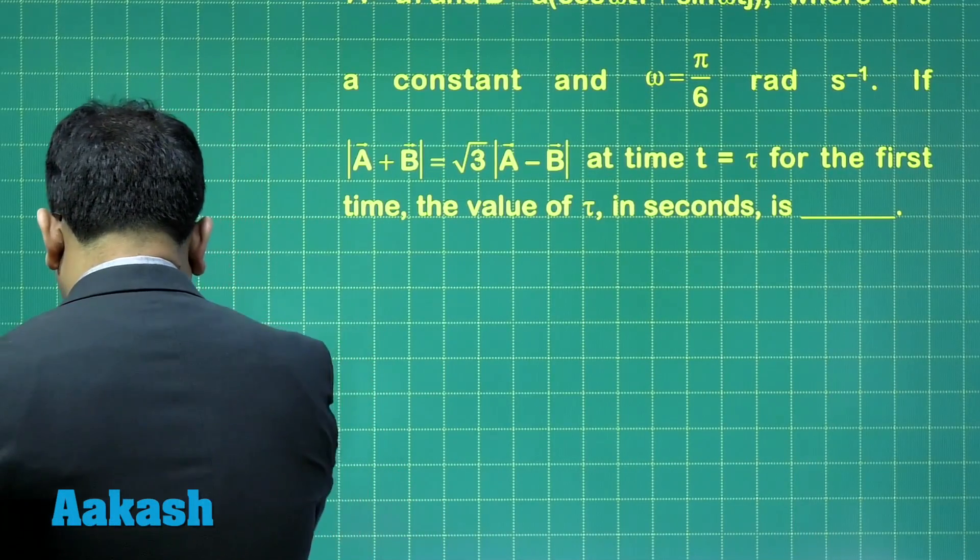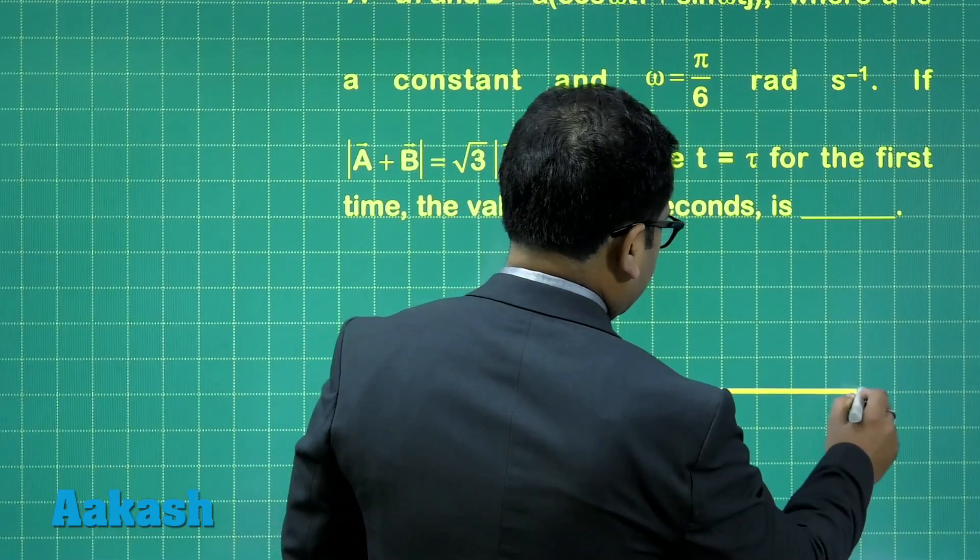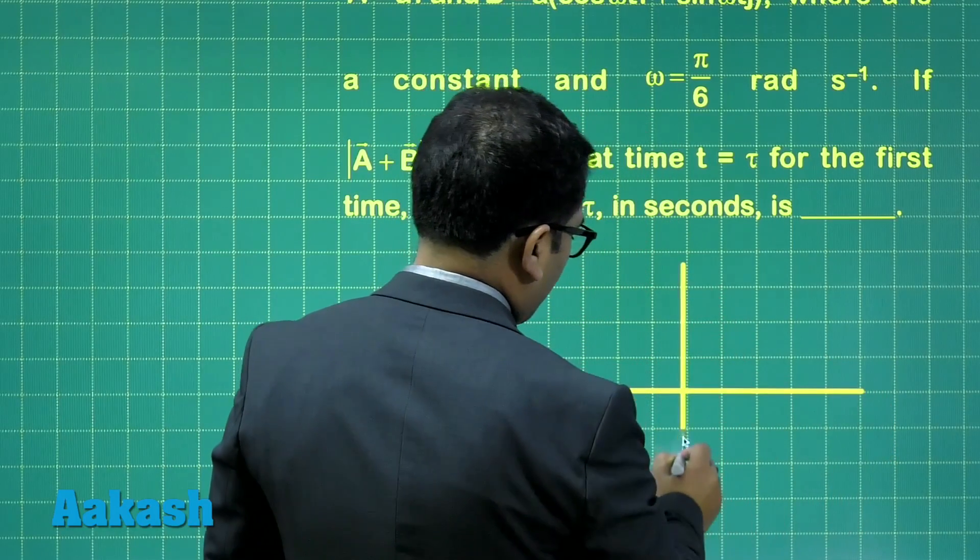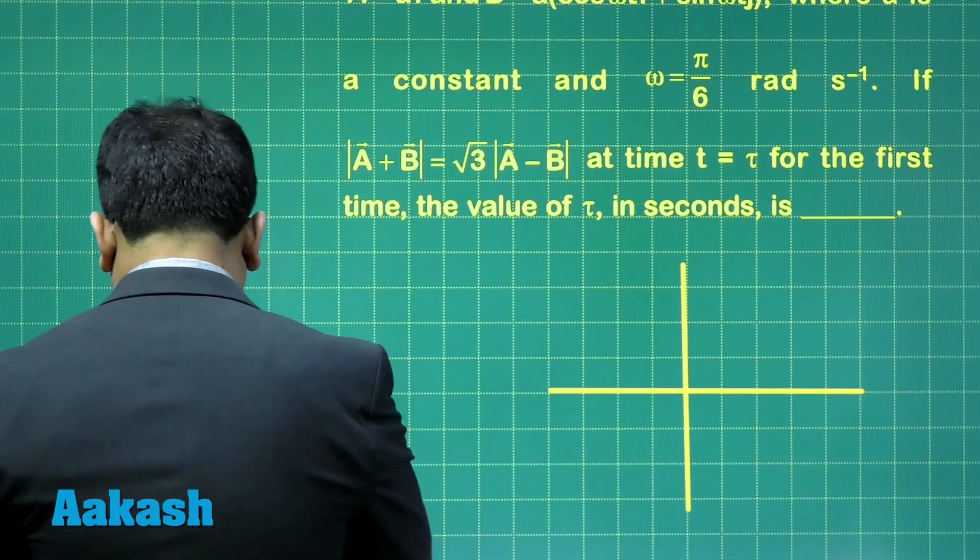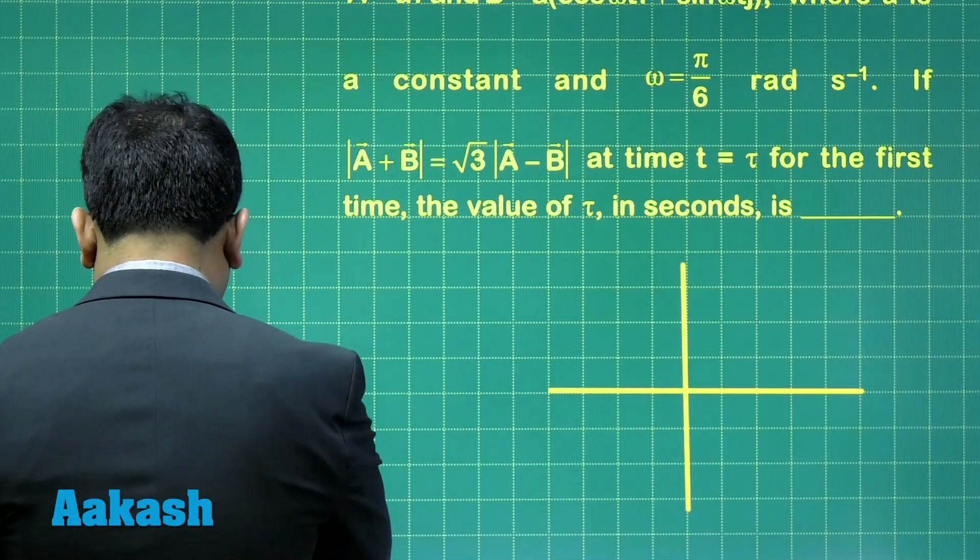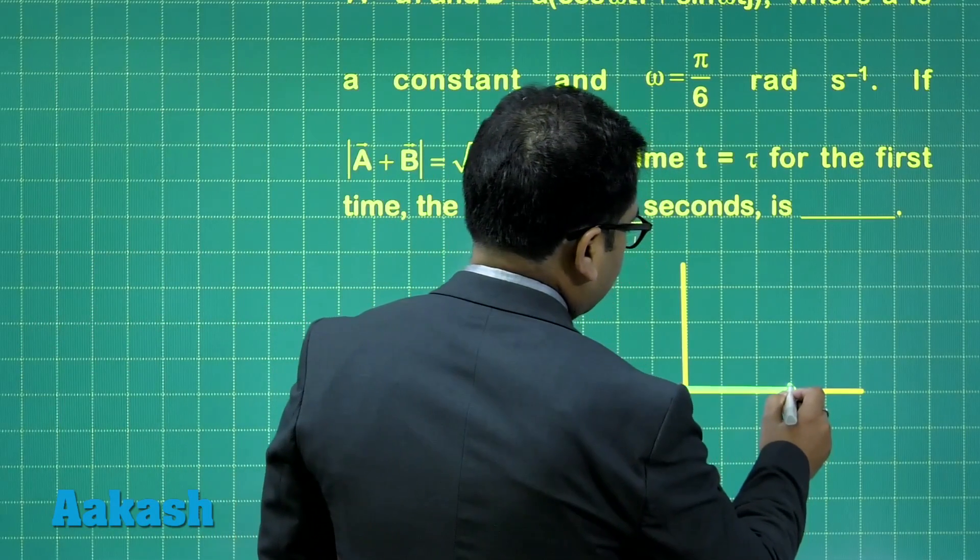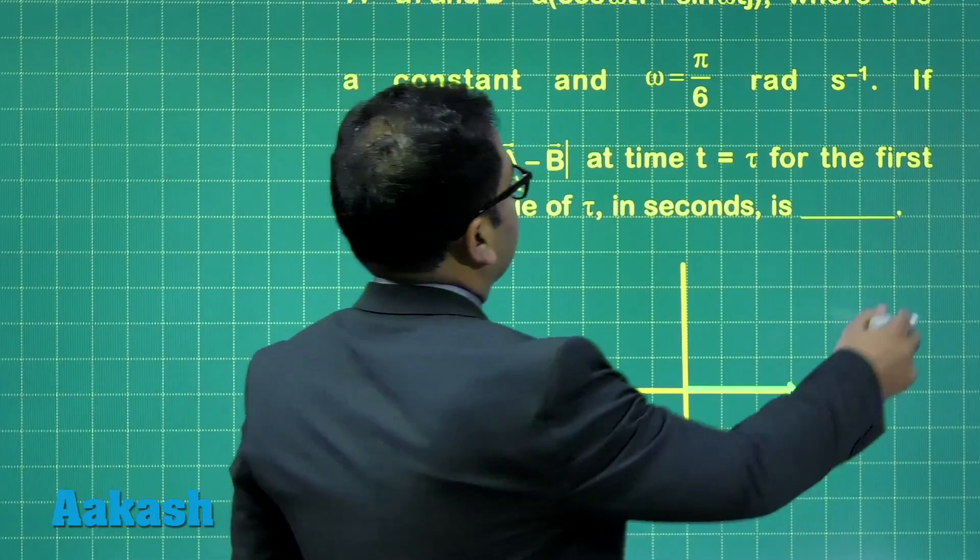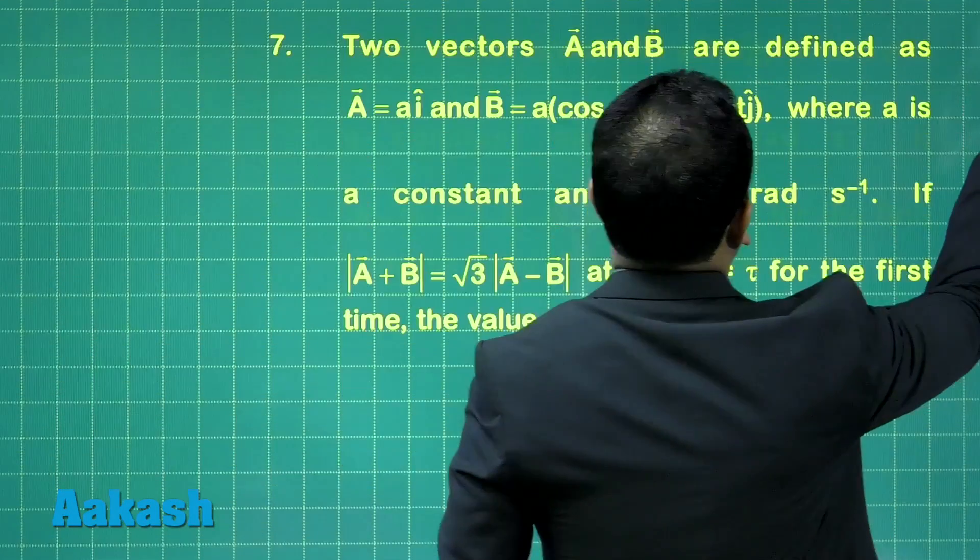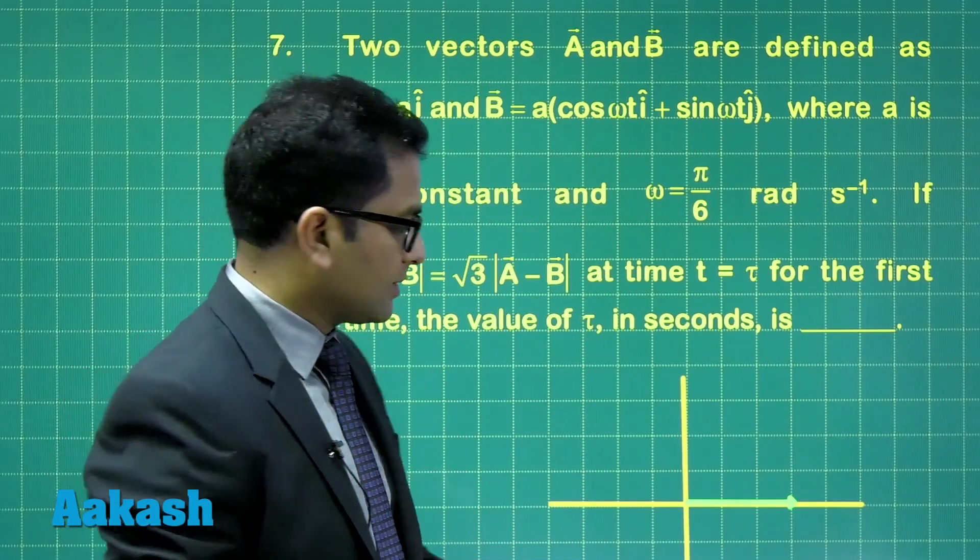First, let me draw the x and y axes. The A vector is A î, so the A vector would be like this along the x-axis. B vector is A cos ωt î + A sin ωt ĵ.